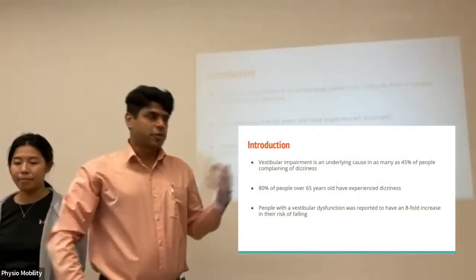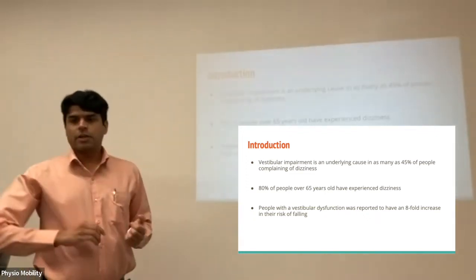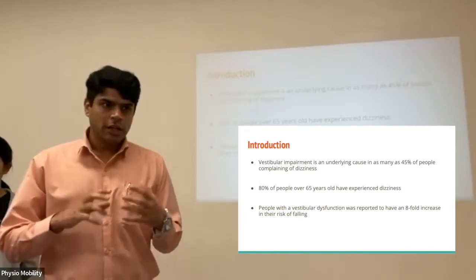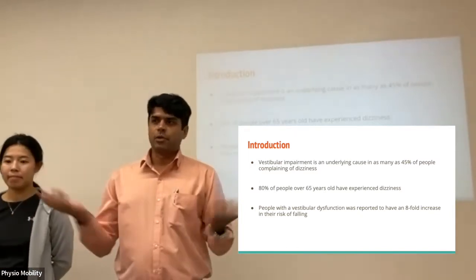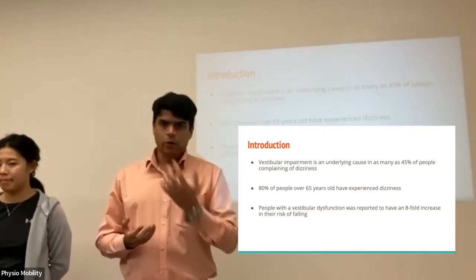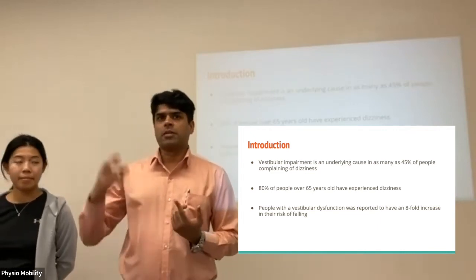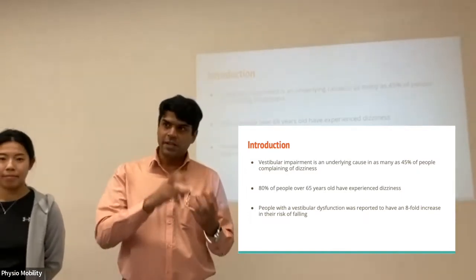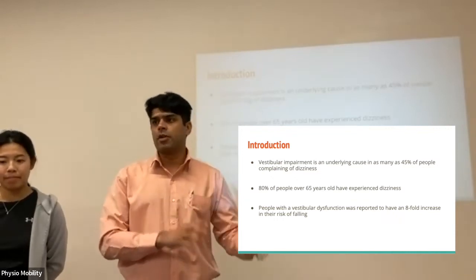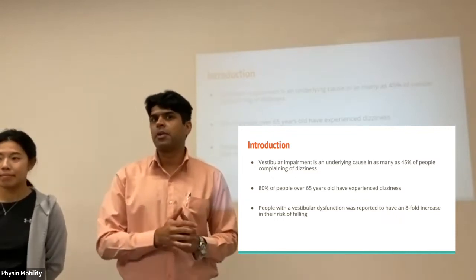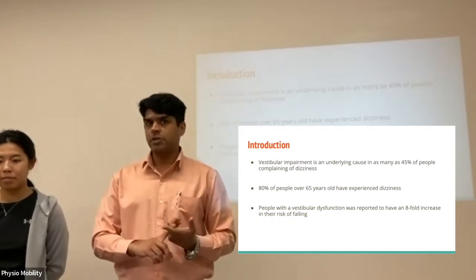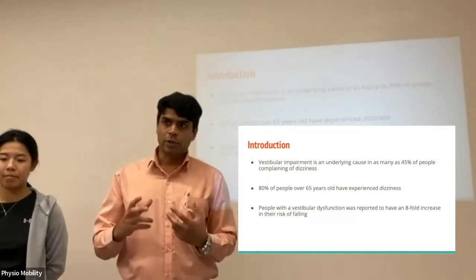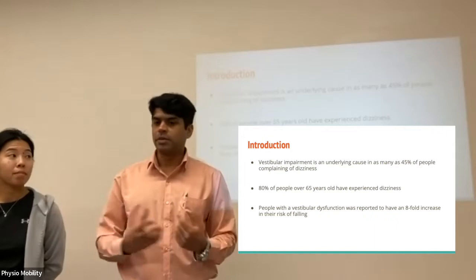Just a brief introduction. Vestibular impairment is an underlying cause in as many as 45% of people complaining of dizziness. When we say dizziness, it is like an umbrella term — it could be because of blood pressure issues, something in the brain, or anything. But vestibular system-specific issues are 45% of the cause and effect. Almost half the population that has dizziness and balance issues has some component of the vestibular system involved, which is why it is so important for us to know what we can do to help things get better.